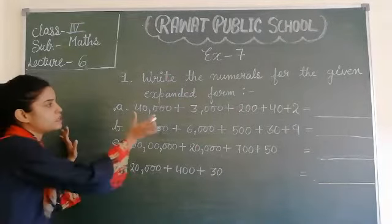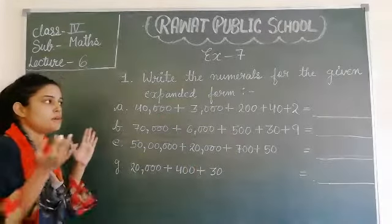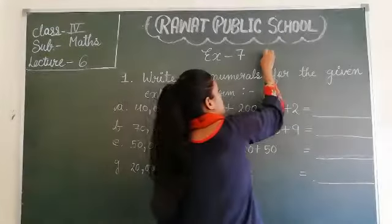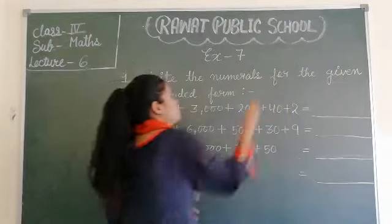Ab isko hume nikna hai numerals form me. Numerals form matlab ek tarike se isko kya hai? Hume expanded ko numerals me nikna hai. Numbers numerals ka means is tarike se 7, 6, 4, 9 is tarike se. Thik hai? Ye hoti numeral form.